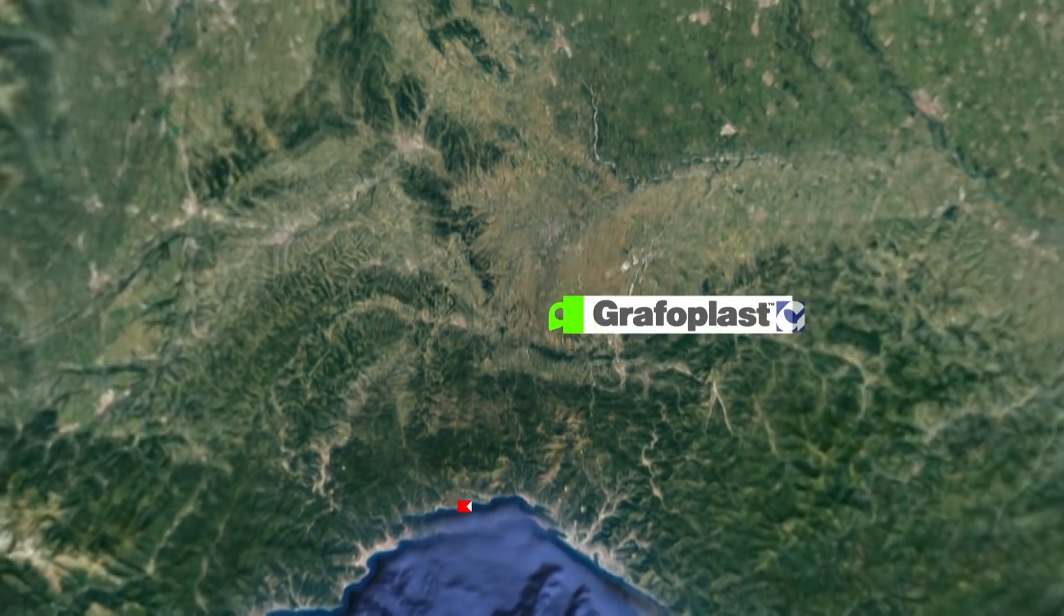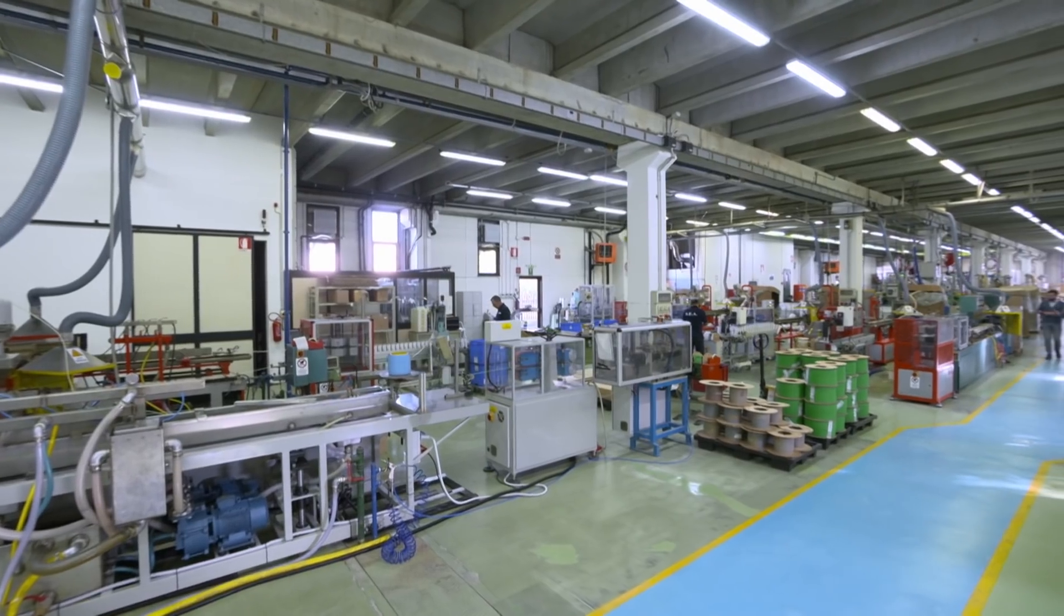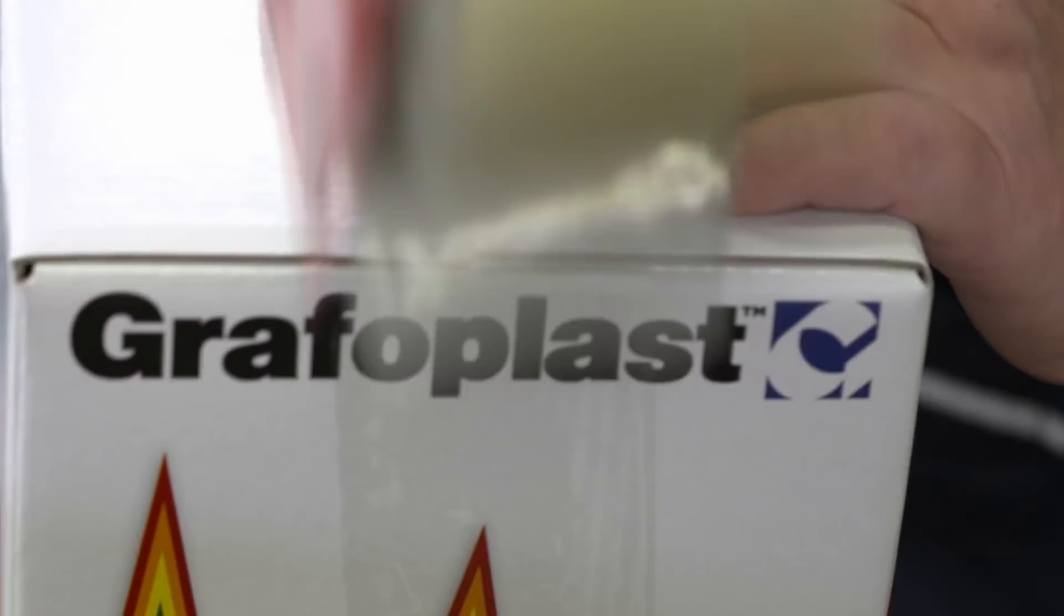The Predosa plant, strategically located between Genoa and Milan, is so flexible that it can also produce small batches and customized products.